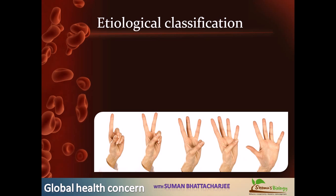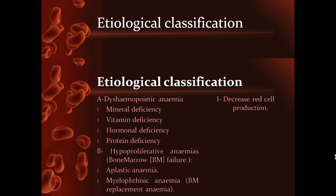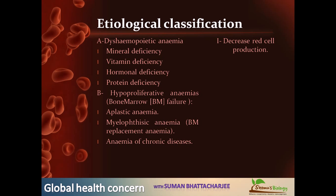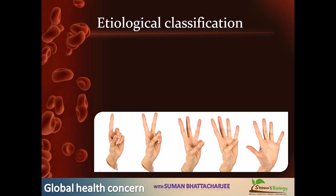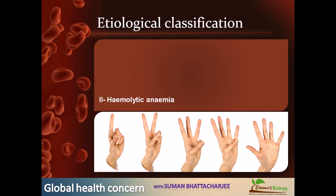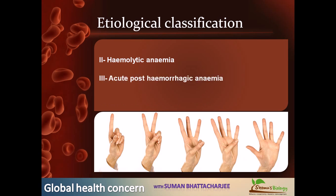The second major class is hemolytic anemia. The first class we discussed was all about decreased red cell production. In hemolytic anemia, the issue is destruction of red blood cells. The level of red blood cells may be fine during production, but they are destroyed inside the body. This results in a very short lifespan of RBCs, which is why these are called hemolytic anemias.